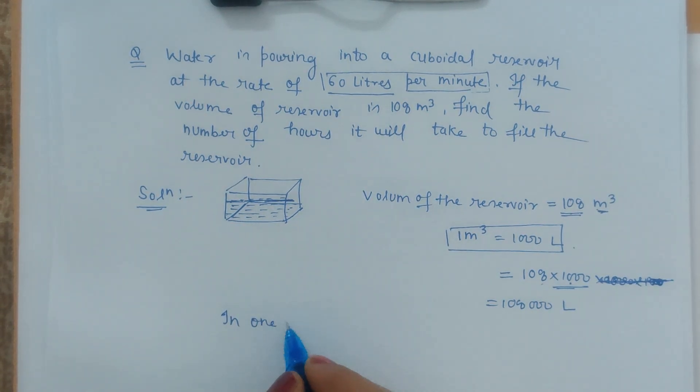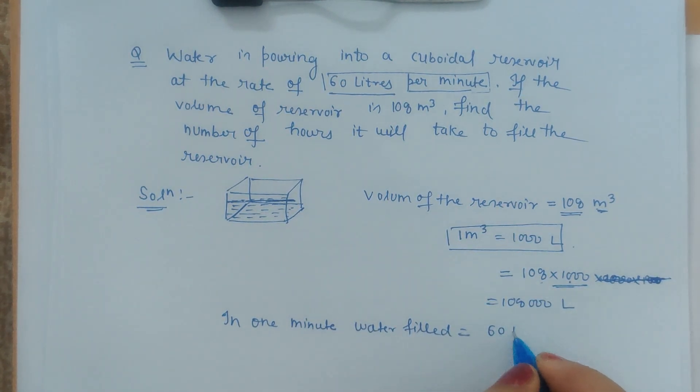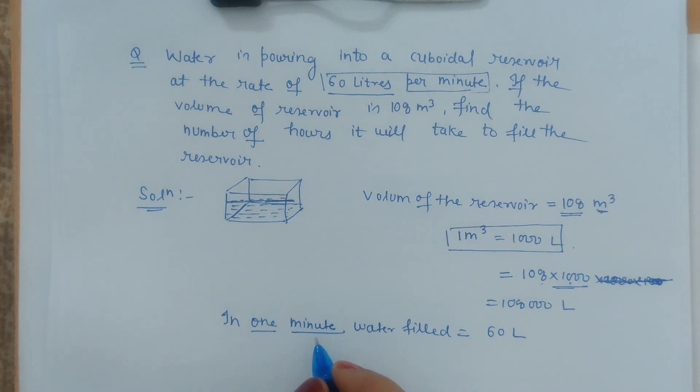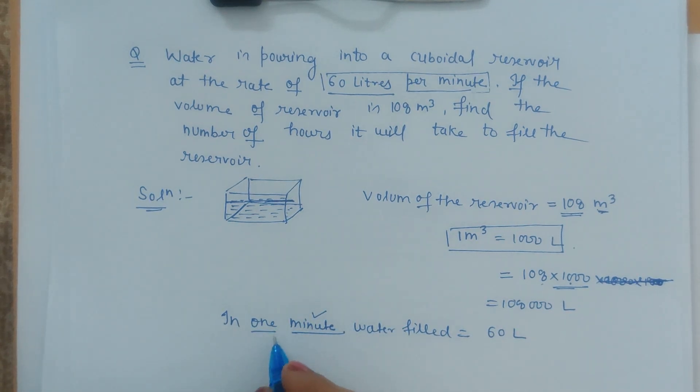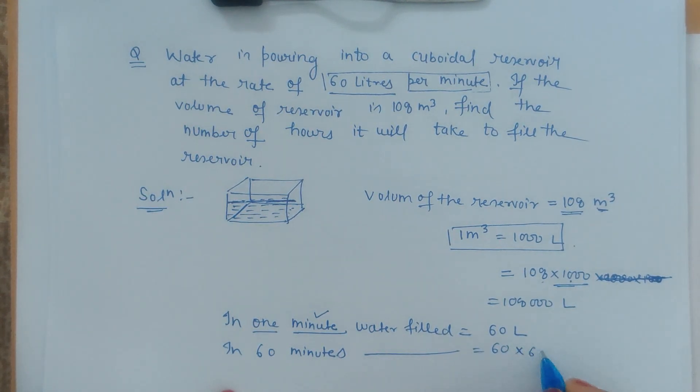In one minute, water filled is 60 liters. We have to find the number of hours, so first convert this minute to hours. How many minutes are there in one hour? 60 minutes. In 60 minutes, more portion of the reservoir will be filled. In 60 minutes, water filled will be 60 into 60, that is 3,600 liters.